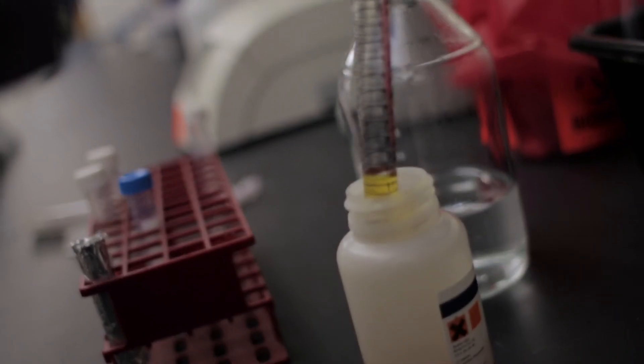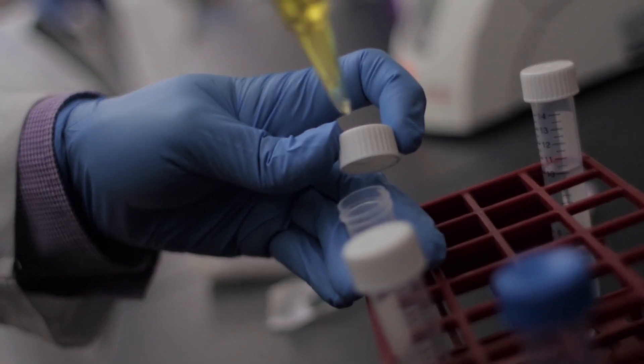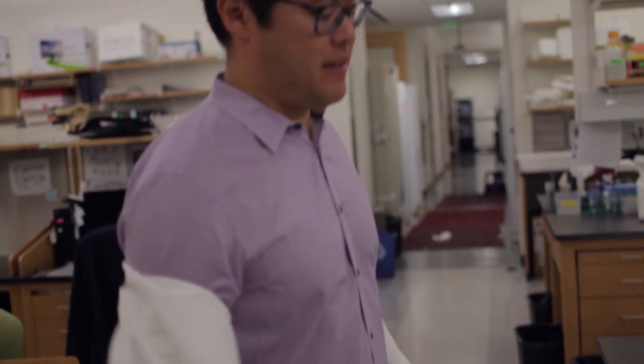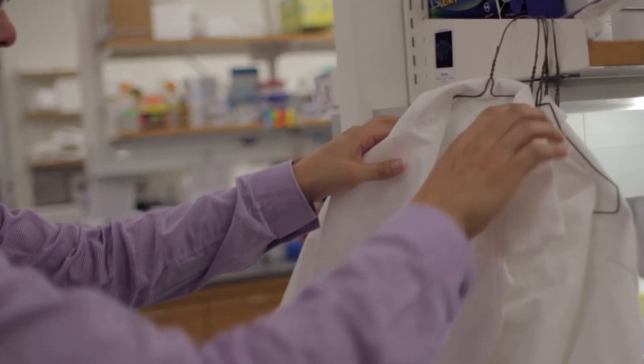We've been able to take ALS patients' skin cells and convert them into the types of nerve cells that are degenerating in their bodies. We've already identified compounds that we think have a good chance of reversing the disease process in the patient. There's a real need for discovering something that's going to prolong the lives of these patients. And that's why we do what we do.